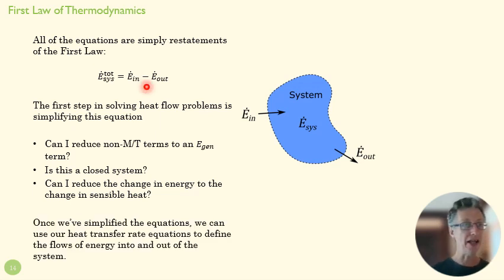Once we've simplified that, remember, these are all going to be rate equations. That's what those little dots are. Then we can use the rate equations for convection, conduction, and radiation to solve for the flows into and out of the system. So that's where we'll turn next in the first couple of days here is remembering what those rate equations are back from our intro physics classes.